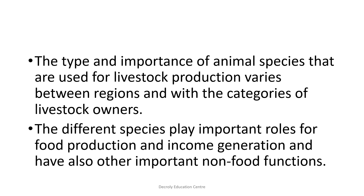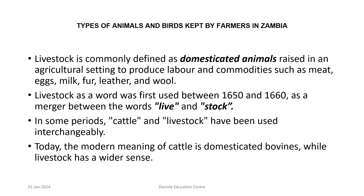The type and importance of animal species used for livestock production varies between regions and with the categories of livestock owners. The different species play important roles for food production and income generation and have other important non-food functions. Livestock is commonly defined as domesticated animals raised in an agricultural setting to produce labour and commodities such as meat, eggs, milk, fur, leather, and wool.